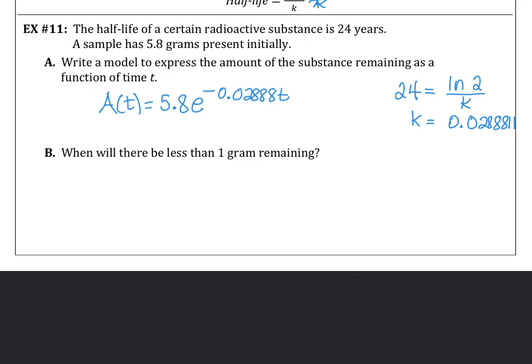To finish this off, when will there be less than 1 gram remaining? So when is 5.8e^(-0.02888t) less than 1? Solving by dividing both sides by 5.8, e^(-0.02888t) is less than 0.172413. And again,